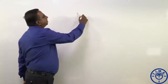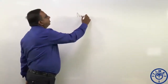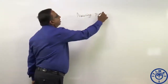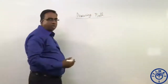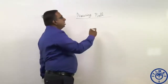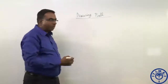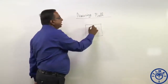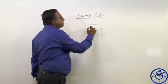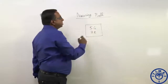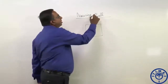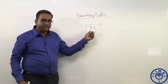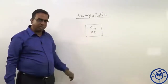Let us now look at a model where we are going to draw a ball from a box. There is a box which contains 5 green balls and 7 red balls.